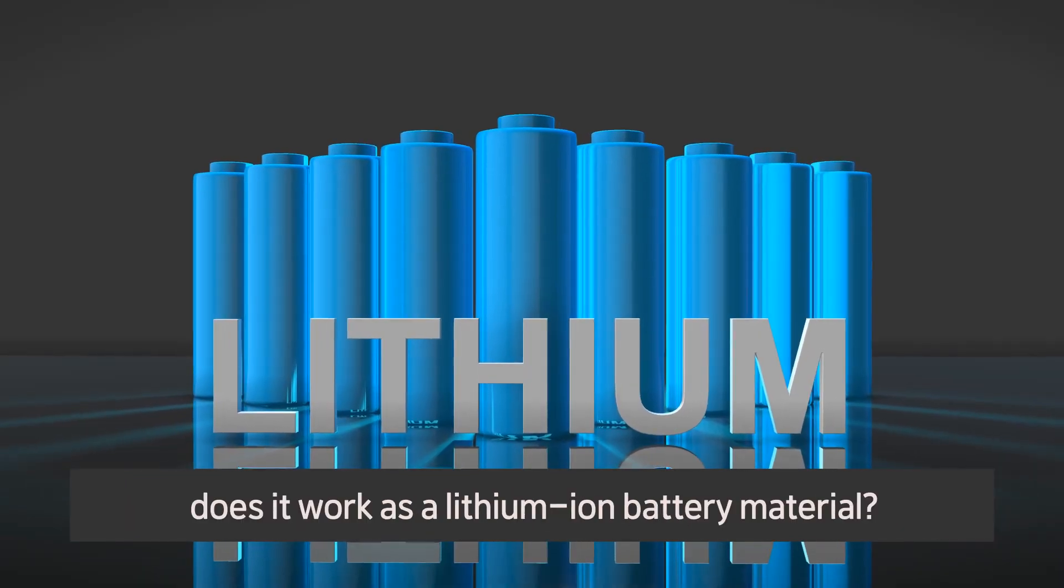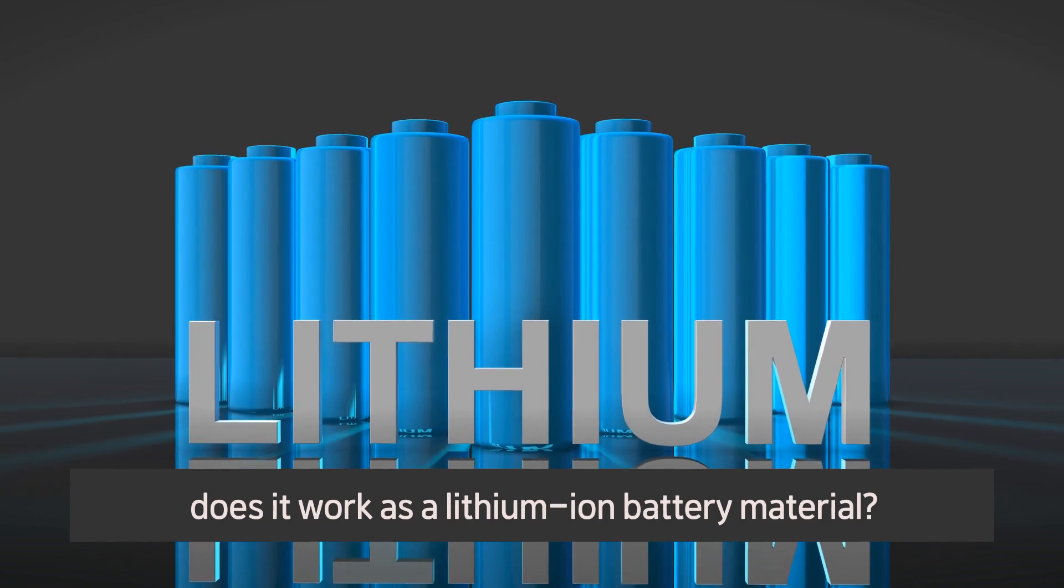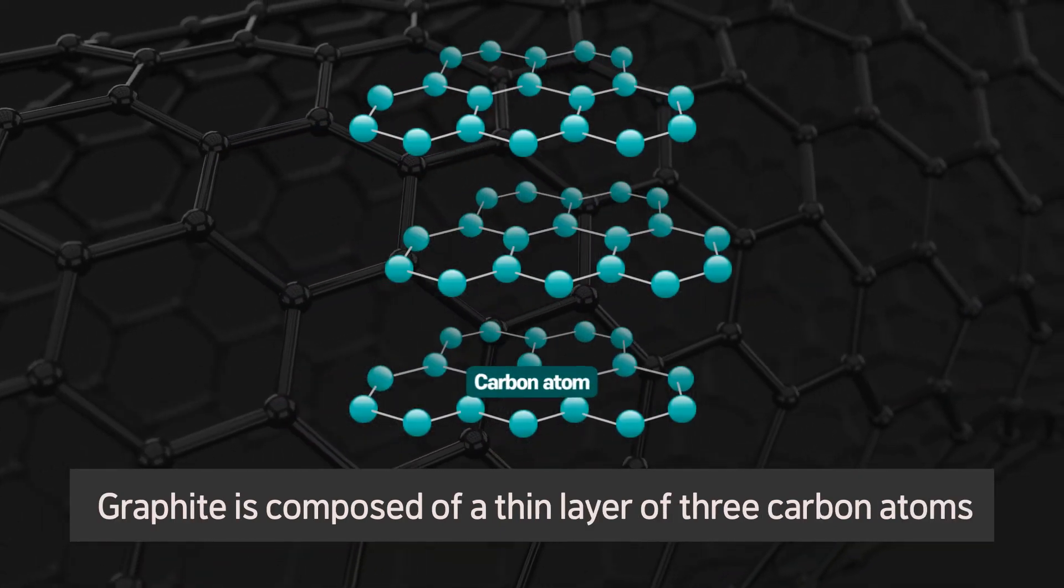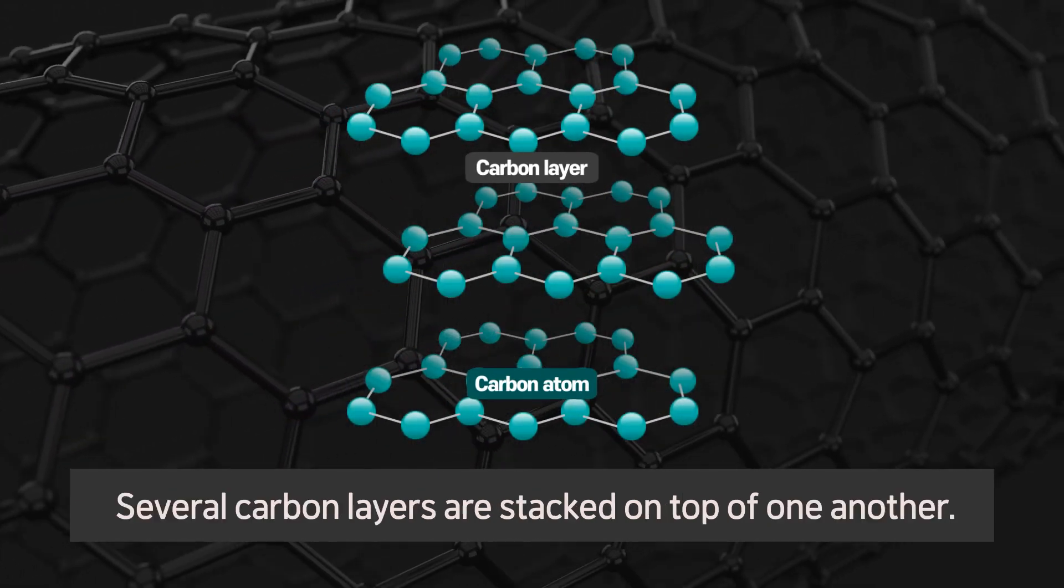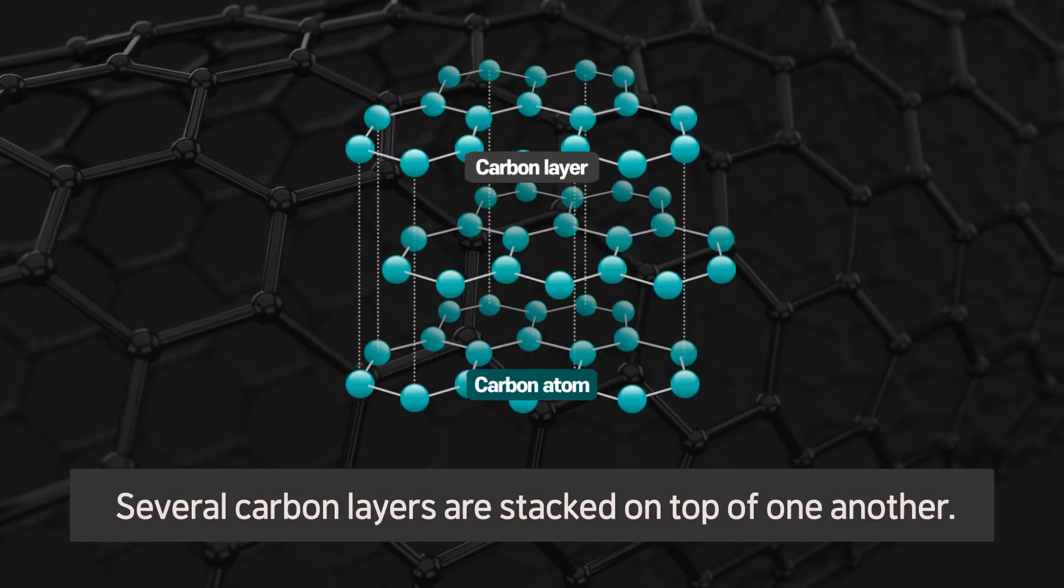So, how exactly does it work as a lithium-ion battery material? Graphite is composed of a thin layer of three carbon atoms that are bonded together. Several carbon layers are stacked on top of one another.